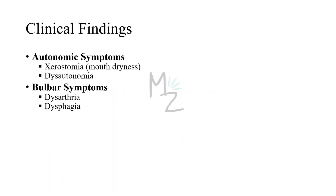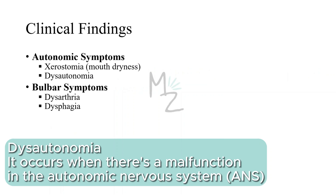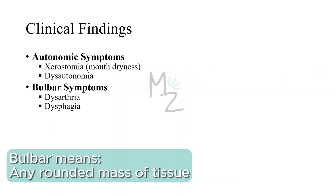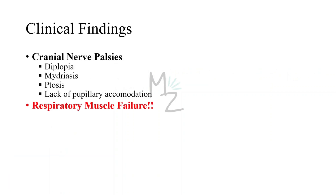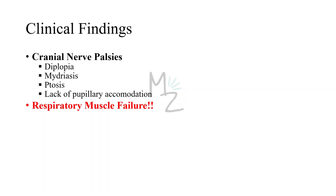Clinical findings include autonomic symptoms such as xerostomia — dry mouth — and dysautonomia. There are bulbar symptoms like dysarthria and dysphagia, as well as cranial nerve palsies leading to diplopia, mydriasis, ptosis, and lack of pupillary accommodation. A particularly dangerous finding is respiratory muscle failure: when respiratory muscles fail to contract, this leads to respiratory distress, arrest, and potentially death.